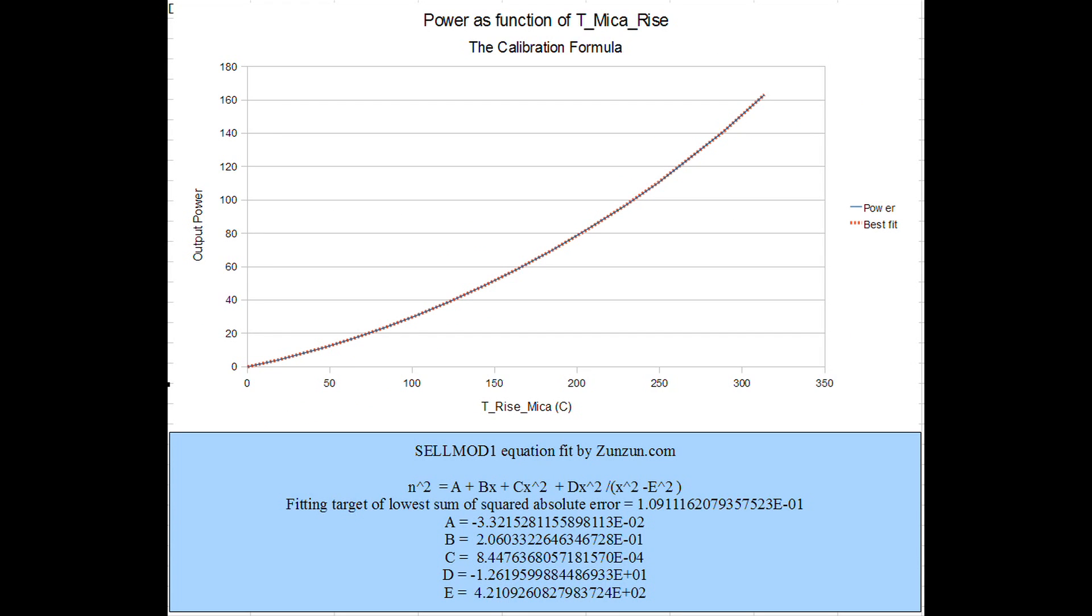In order to do this calculating automatically in the instrumentation software, we turned it around to plot the power in as a function of temperature. Then we fit an equation to model that curve. That equation is what the computer uses to calculate power out. Then we subtract the power in from the power out to get an indication of the excess power generated by the Chilani wire.